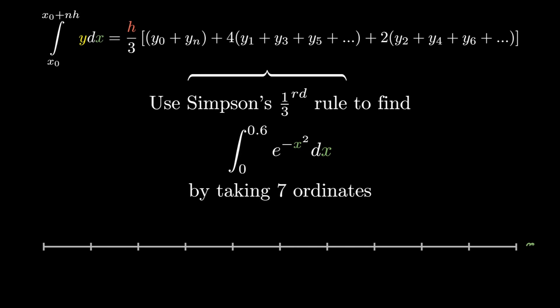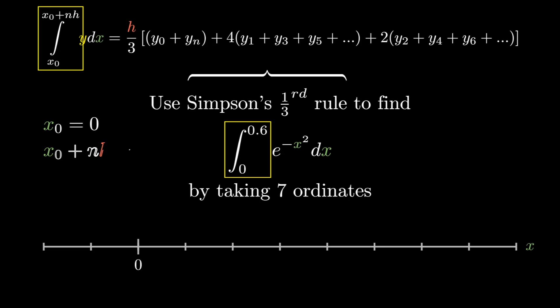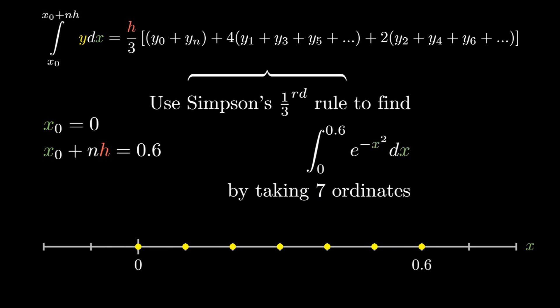We know the Simpson's one-third rule formula. Comparing with the given question: the lower limit gives x0 = 0, and the upper limit gives x0 + n·h = 0.6. With 7 values of y (y0 through y6), we have 6 equal segments. To find the x values we need h = (upper limit − lower limit) / 6 = 0.6 / 6 = 0.1. This gives x values of 0, 0.1, 0.2, 0.3, 0.4, 0.5, 0.6.